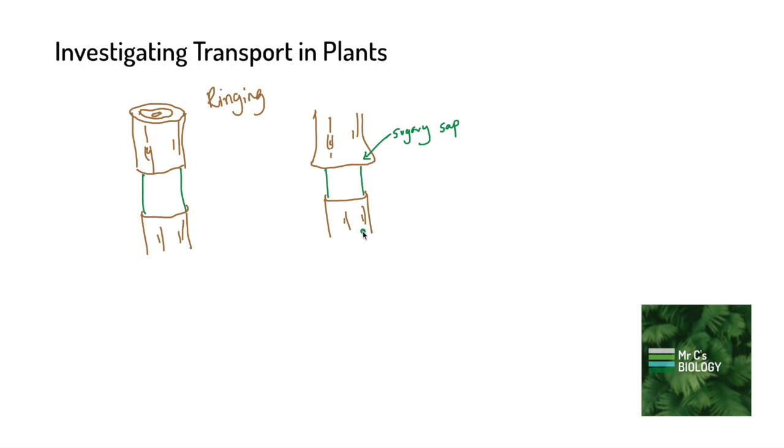Another thing that happens in a ringing experiment is that tissues below the ring will often die and wither because they haven't got the sucrose that is coming through the phloem. So there's another good bit of evidence that the phloem is essential in carrying sugars to all parts of the plant.